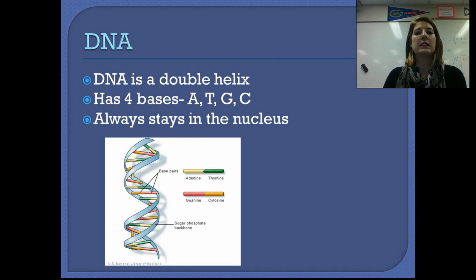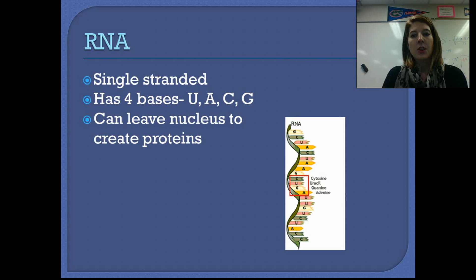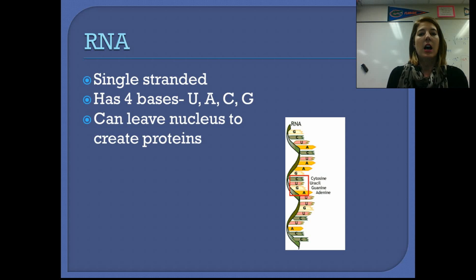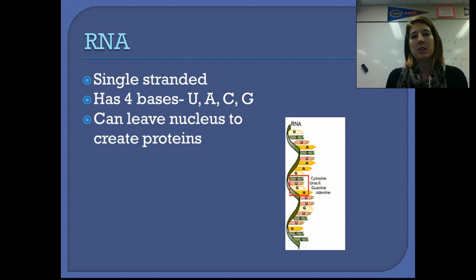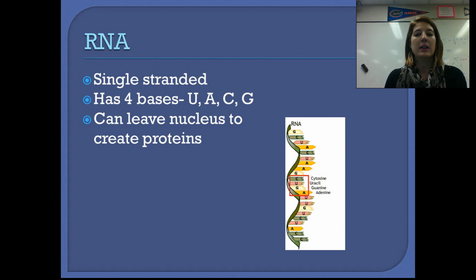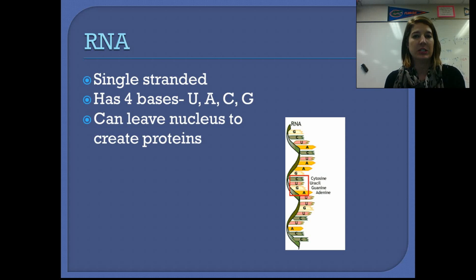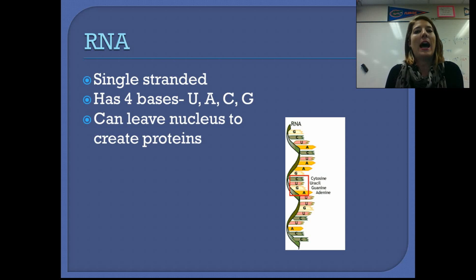Because DNA does not leave the nucleus, there's RNA. RNA does leave the nucleus to create proteins. RNA is a single-sided copy of DNA — it is just one half of what the DNA molecule is. Other than being double-stranded versus single-stranded, RNA has one base that is different. It has adenine, cytosine, and guanine, but instead of thymine, it has something called uracil. So if you're looking at a molecule that contains uracil, you should automatically know that that has to be RNA.